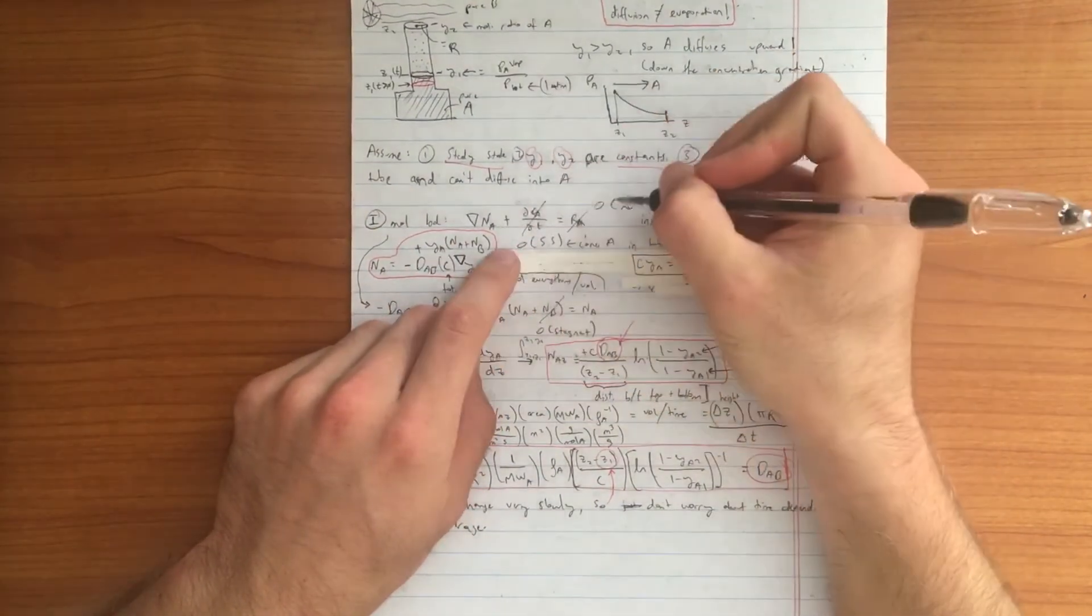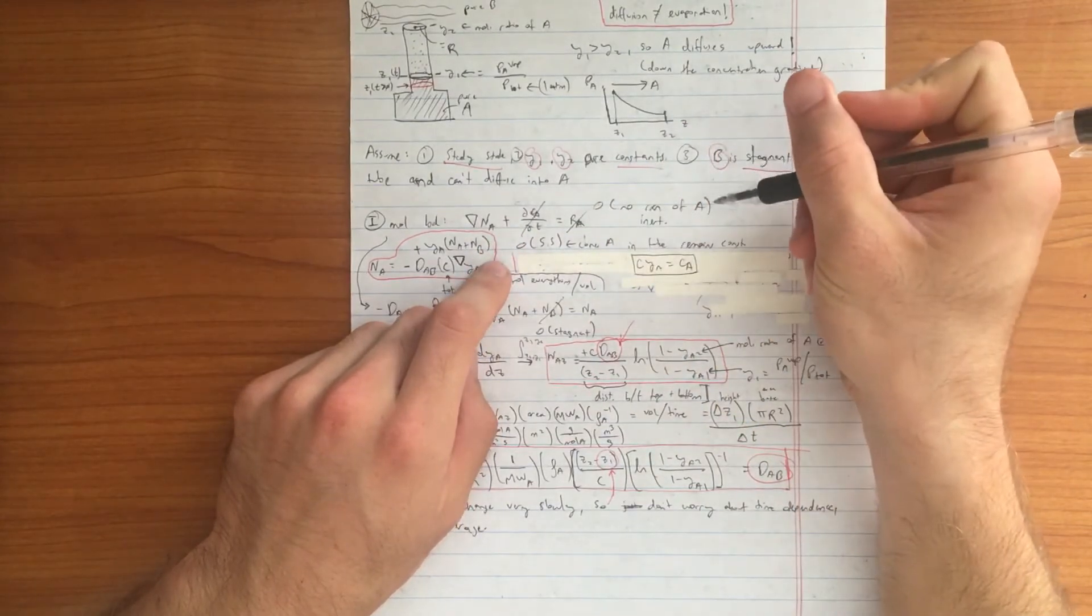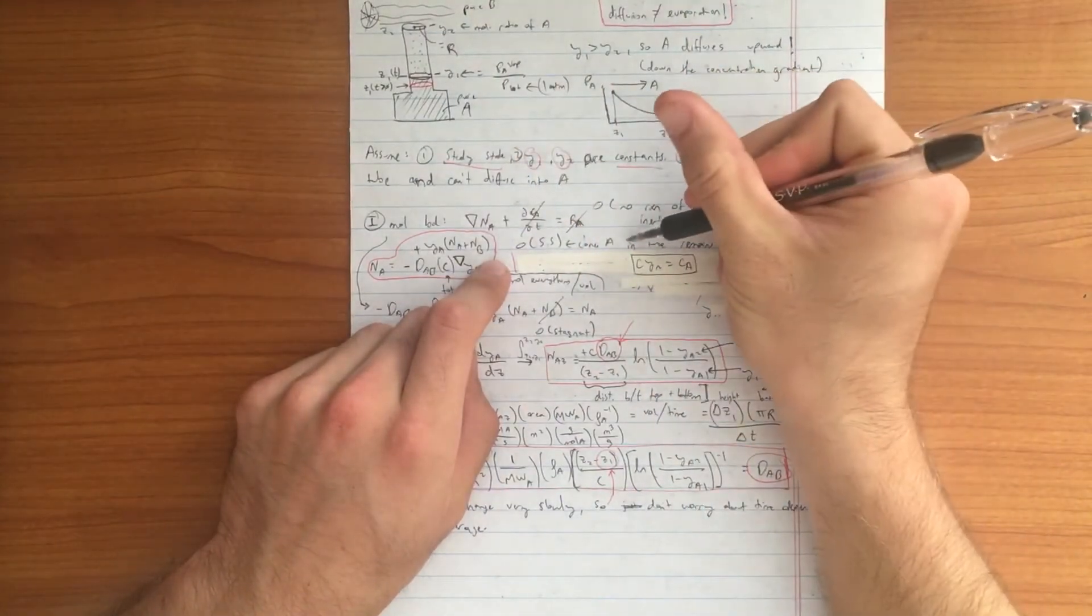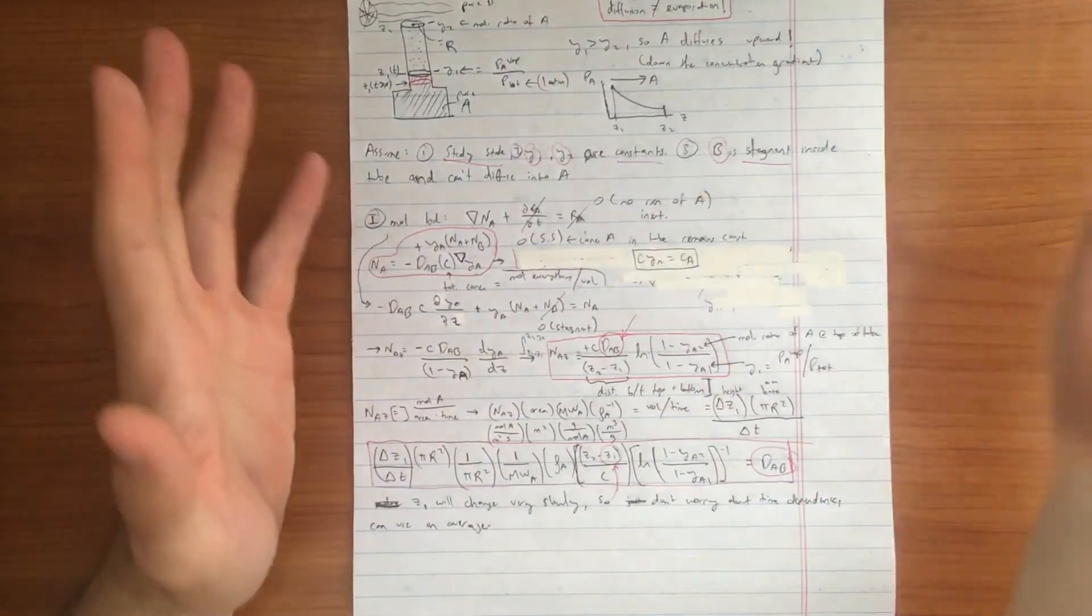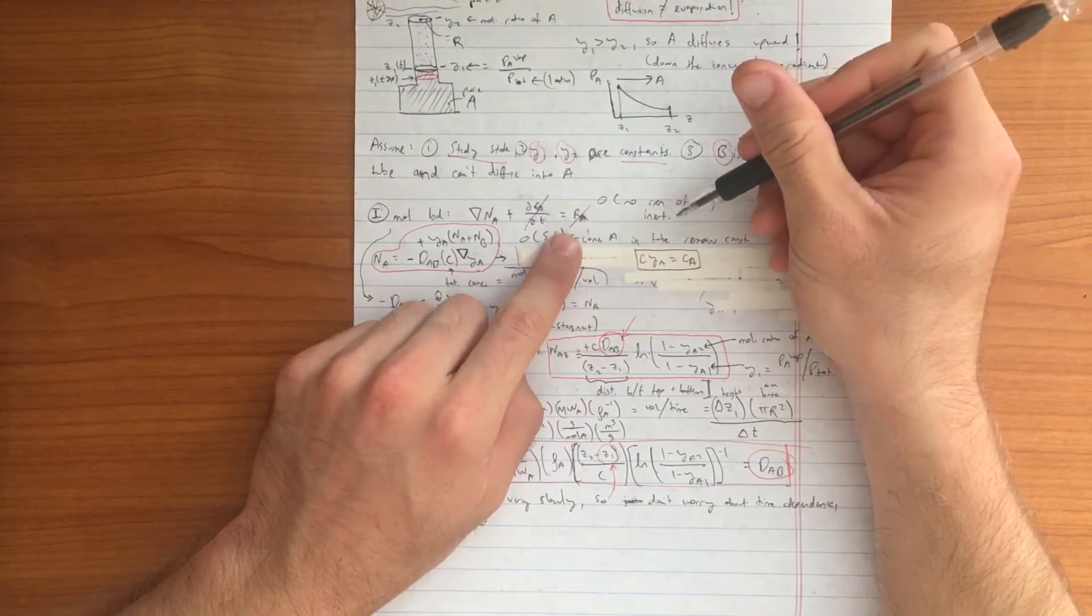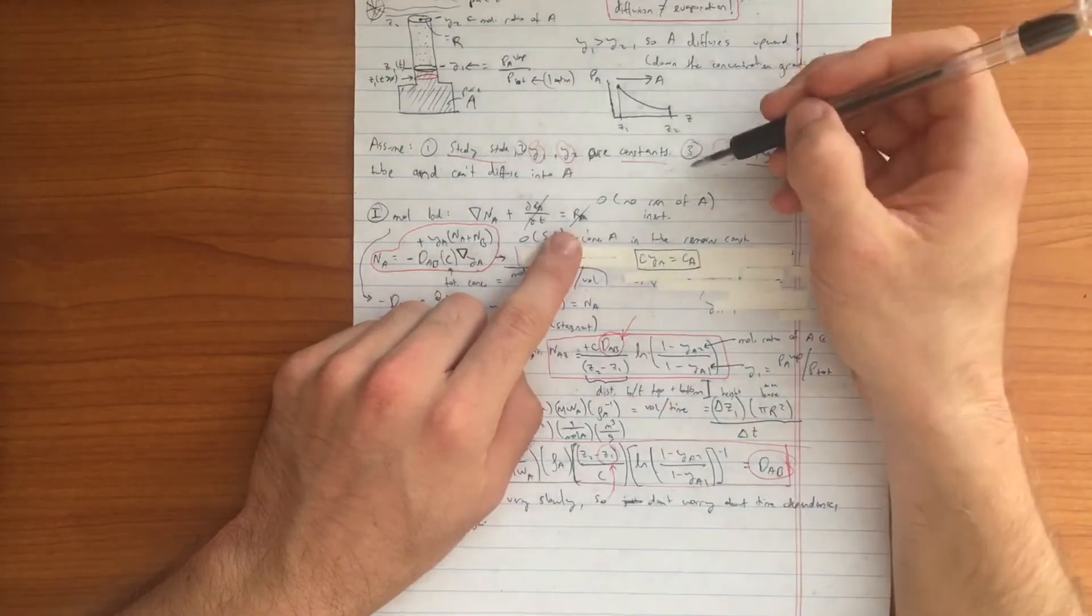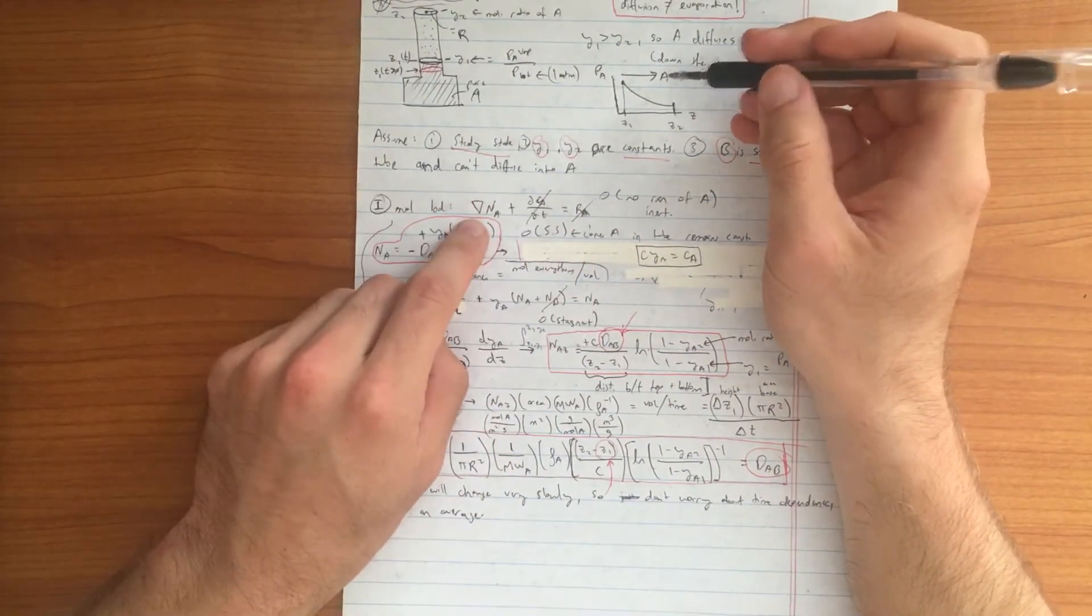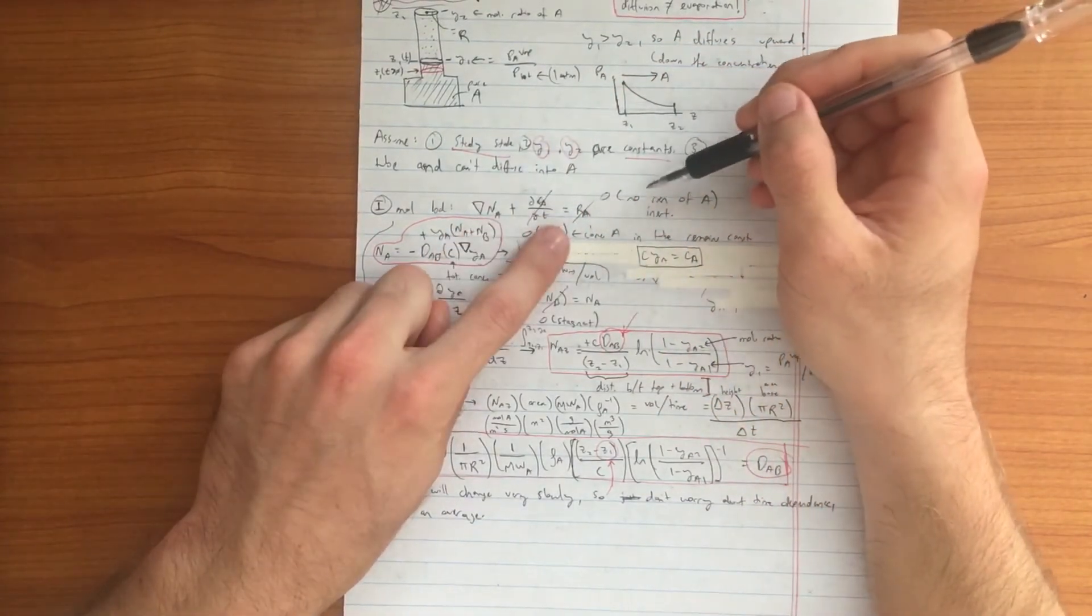The assumptions we can make here is that we can cancel out our dCA/dt term, set it to zero because we can assume that inside this control volume the concentration of A remains constant over time for short durations. The next thing we can cancel out is our rate of reaction of A because there's no reaction occurring. We end up finding that the gradient of NA, the flux of A, must be equal to zero.